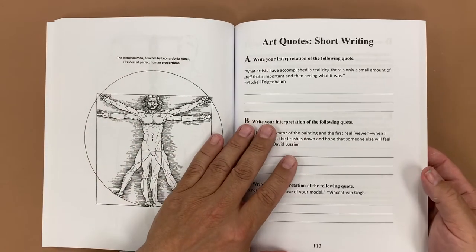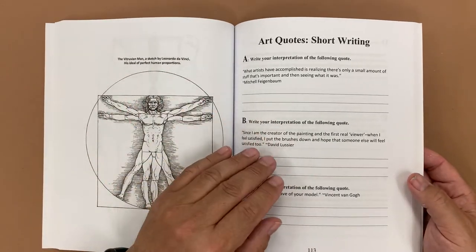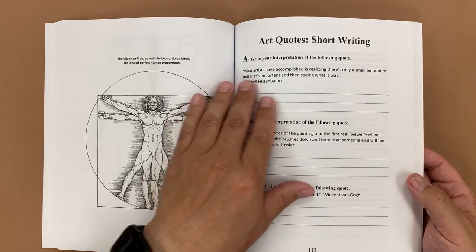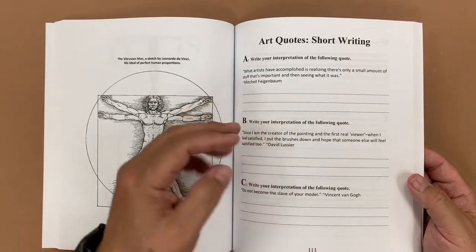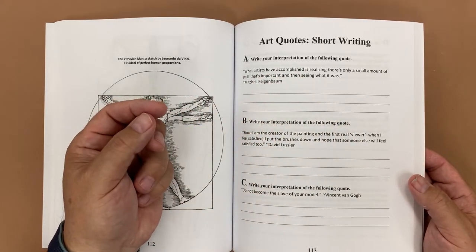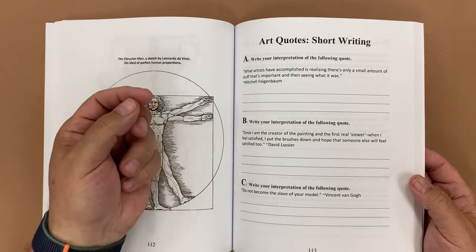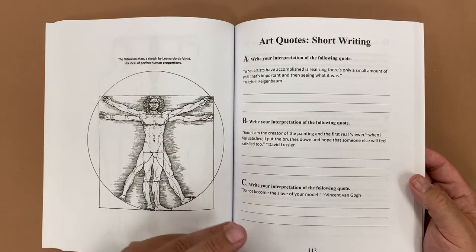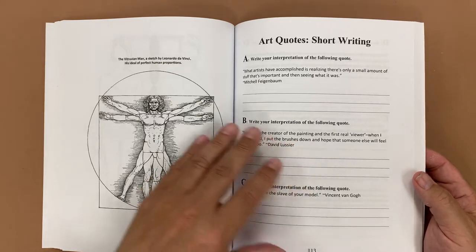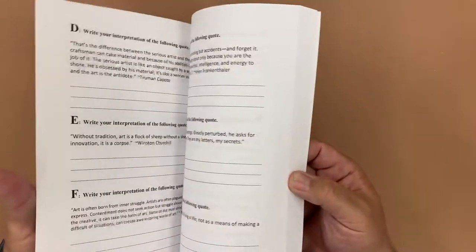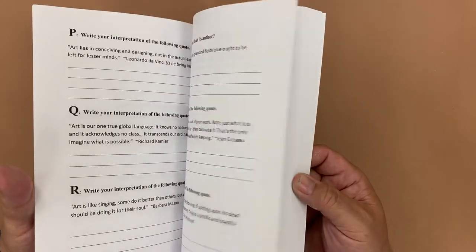Every Monday my students respond to art quotes, so we do this as our bell ringer. It takes about five minutes, so we read a famous quote about art, try and understand what is being said about this, what are we learning about this, and then they would go ahead and write down their interpretation of what they feel is being said in there. So there's quite a few of them, enough to kind of get you through a year.